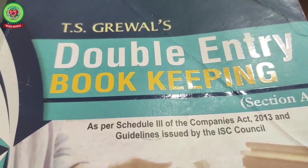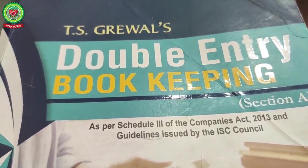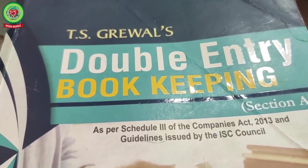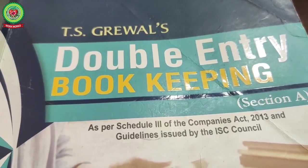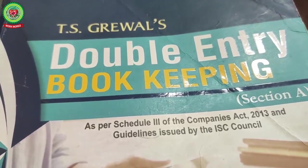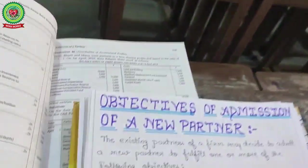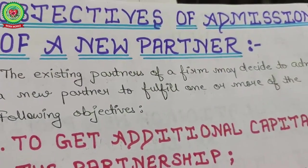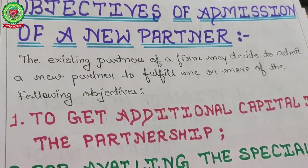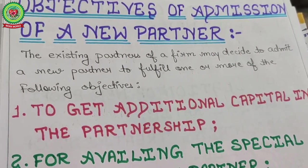Hello students, good morning. It's time for your accounts class and we are on the topic admission of a partner. Yesterday's topic covered workman compensation, investment fluctuation reserve, and now today's topic is all about capital adjustment.